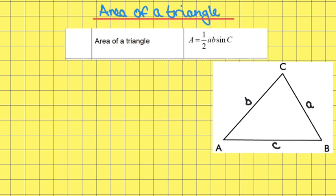In this video we'll look at the area of a triangle. If you look in section 3.2 in the formula booklet, you're given a new formula for the area of a triangle. The area is equal to one-half ab sine C.